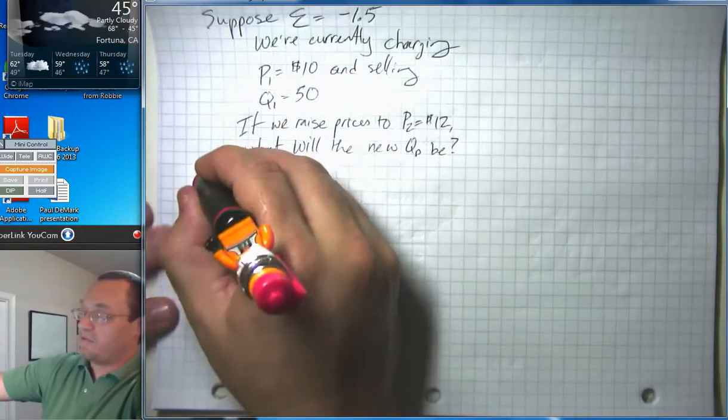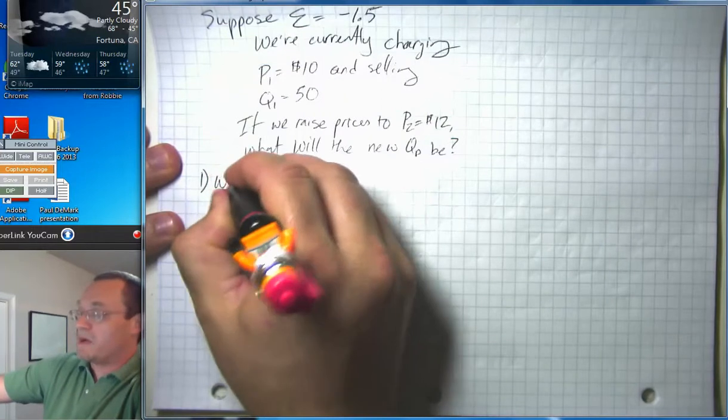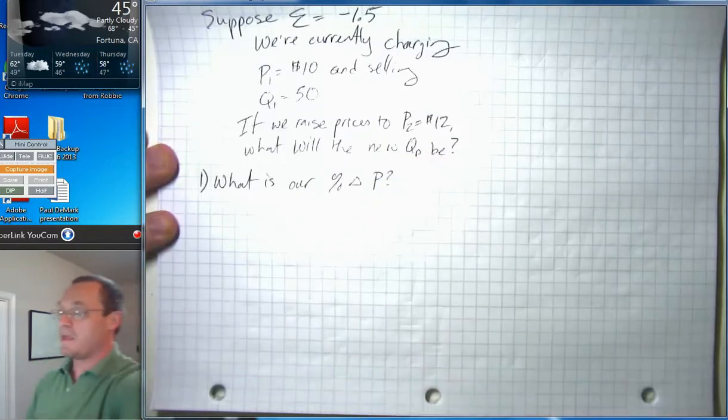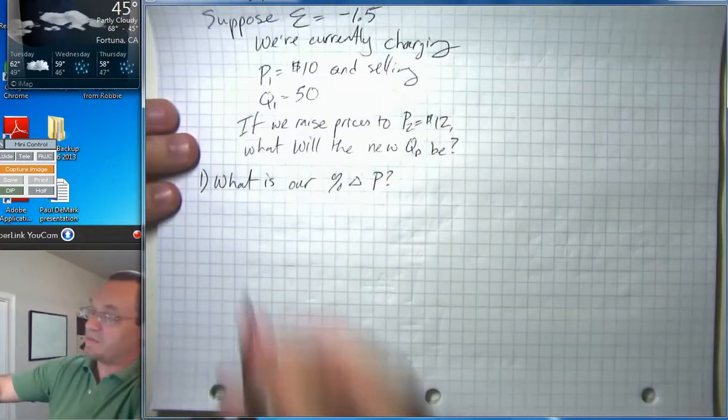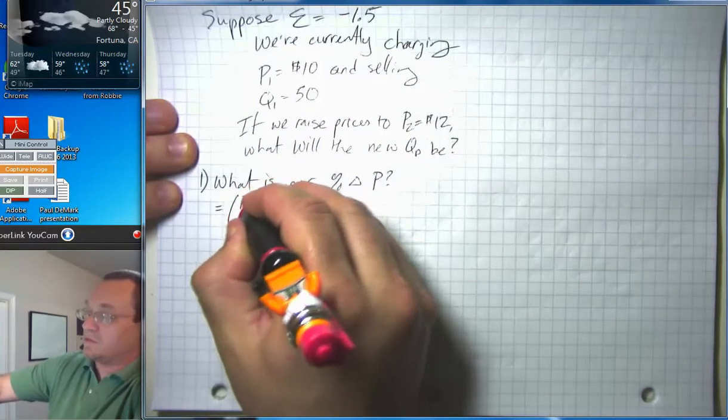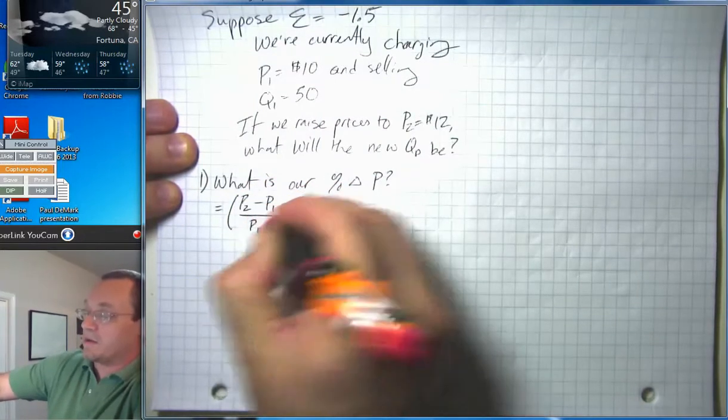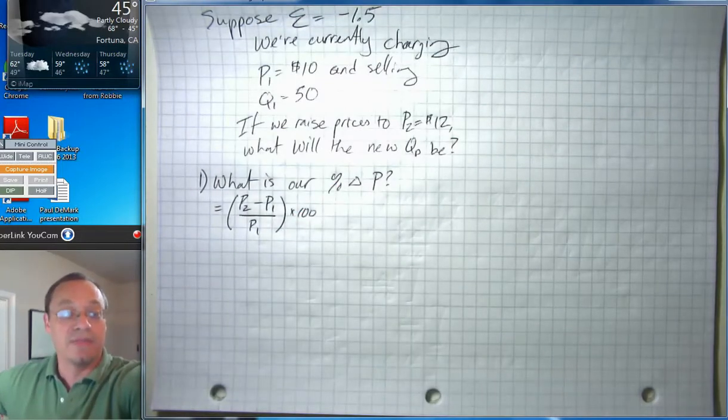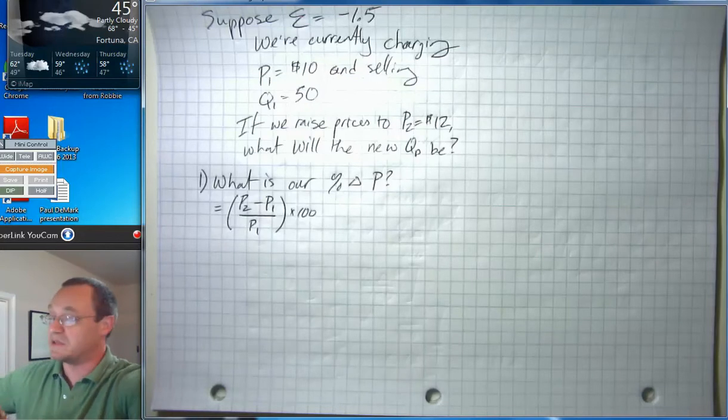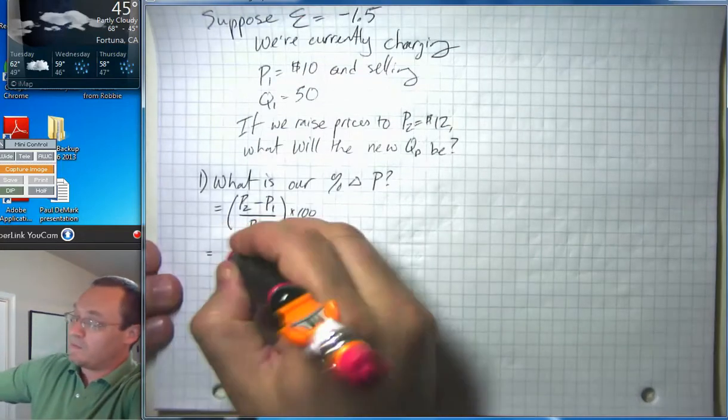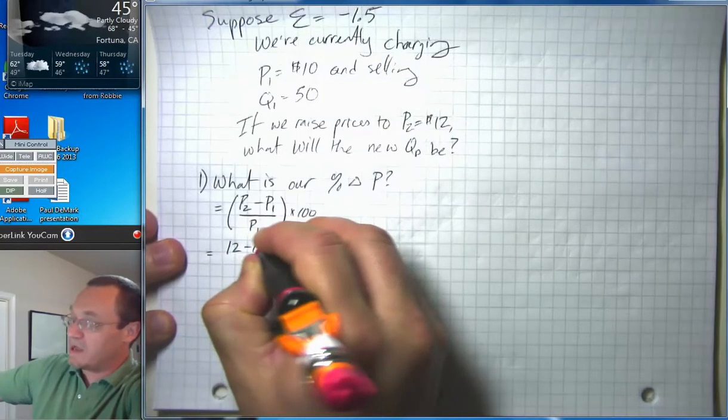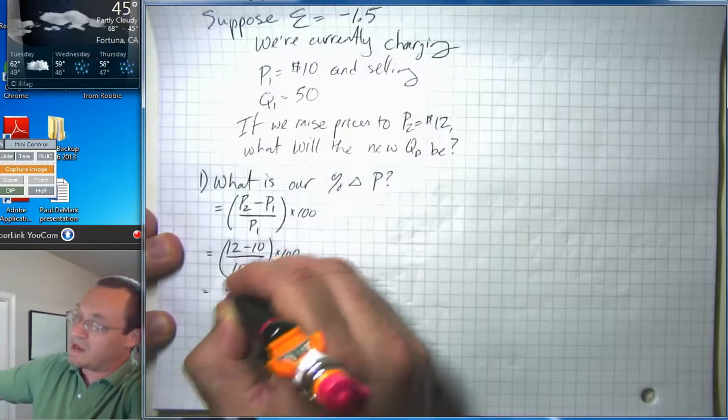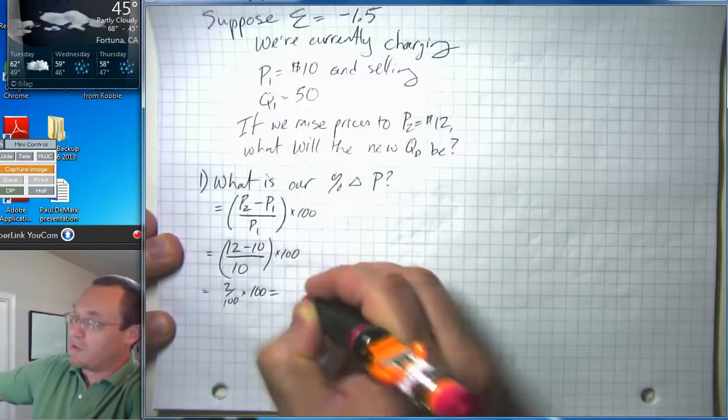So first, let's figure out what is our percent change in P. Our percent change in P is P2 minus P1 over P1 times 100. I'm going to ignore the midpoint thing for now just to keep things relatively simple. So that's going to be 12 minus 10 over 10 times 100, or 2 over 10 times 100, or 20%.